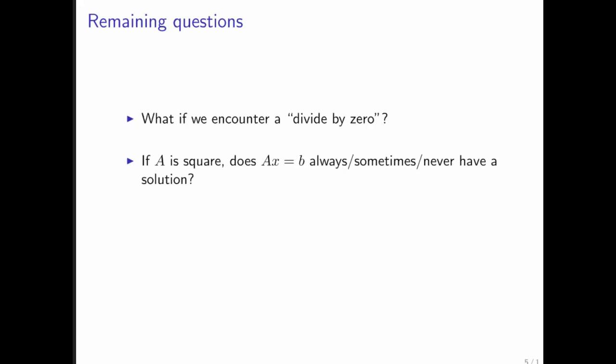If A is square, does Ax equals b always, sometimes, or never have a solution? This is something we need to study.